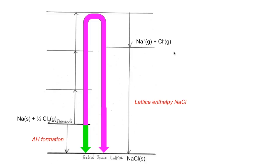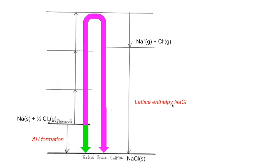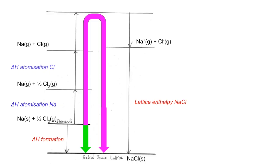We can only do one thing at a time, so each step reflects one change. Down arrows are exothermic processes (shown in red font) and up arrows are endothermic processes. First, we turn solid sodium into sodium gas — that's the atomization of sodium. Then we deal with the half mole of chlorine gas and turn it into a gaseous chlorine atom — that's the atomization of chlorine. We then turn sodium into a 1+ ion from the gaseous atom, which is the first ionization energy of sodium. Notice the electron that must be included — forgetting it is a common mistake.